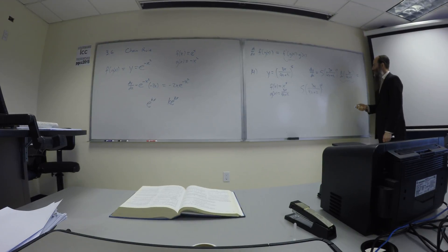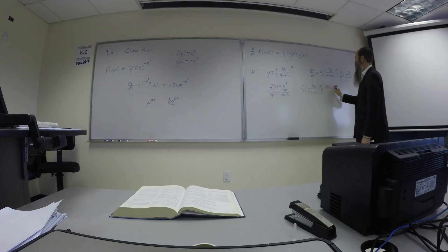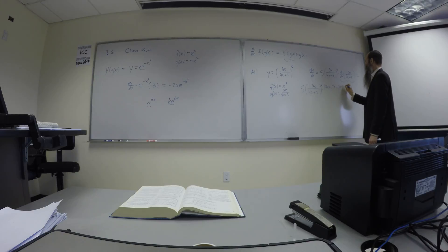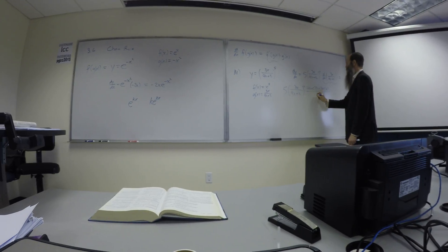So the derivative now is five times 3x over 4x plus two to the fourth, times this derivative, which is going to require a quotient rule. It's a fairly simple quotient rule. It will be bottom times the derivative of the top which is three, minus the 3x times the derivative of the bottom which is four, over bottom squared.